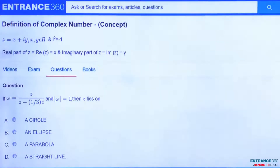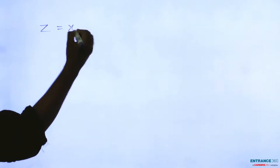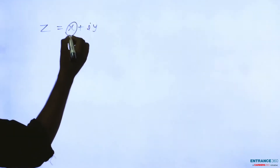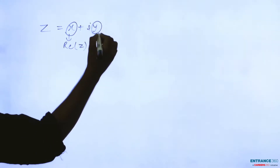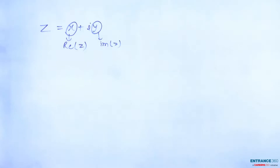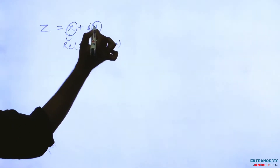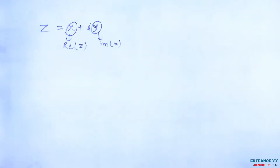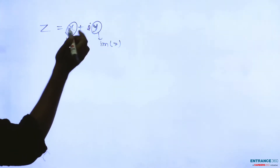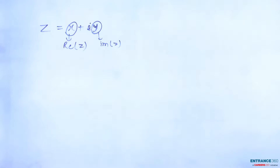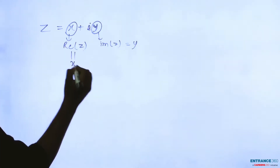First, let's focus on the concept behind this question. The concept is simply the definition of a complex number. If we take any complex number z, we can write it in coordinate form as x plus iy, where x is the real part and y is the imaginary part. The term y is the imaginary part because it is multiplied by iota (i).